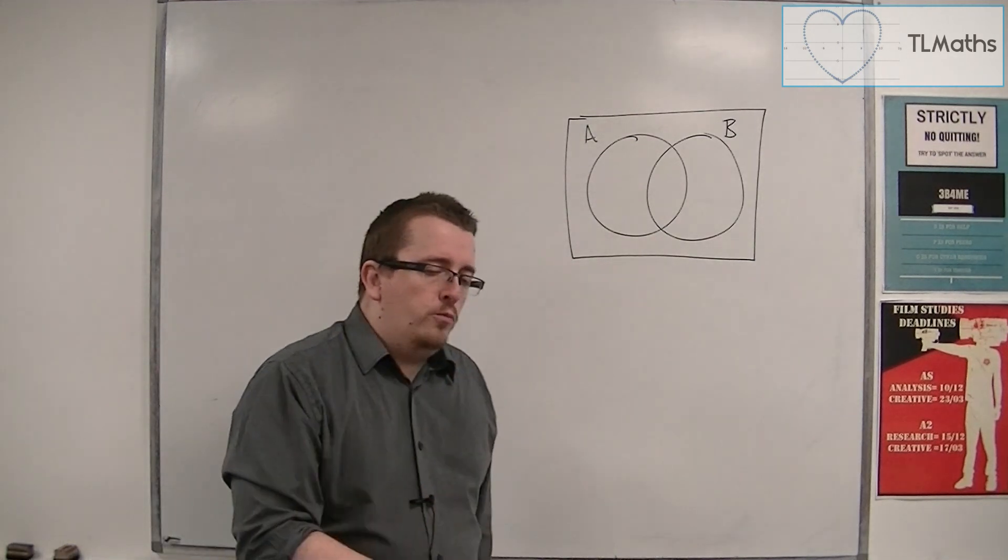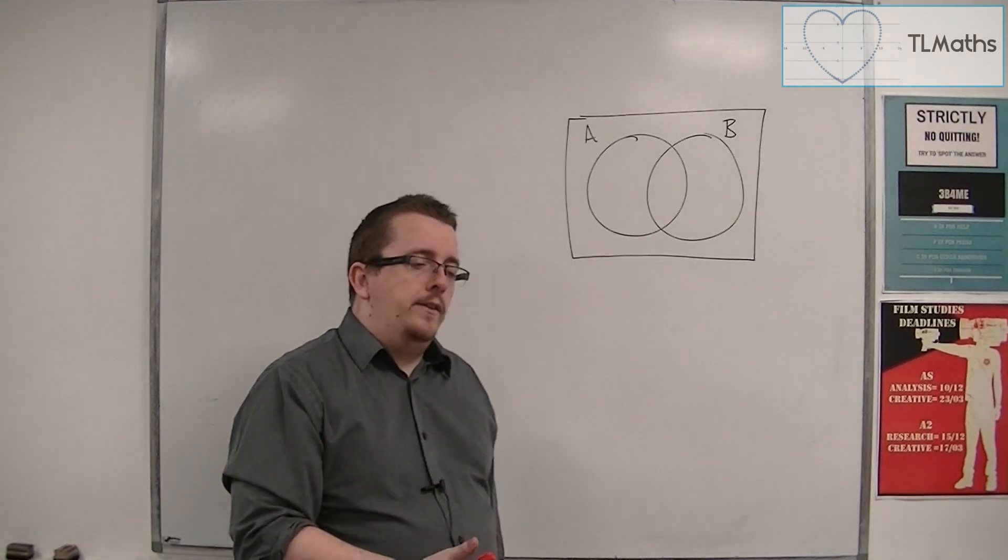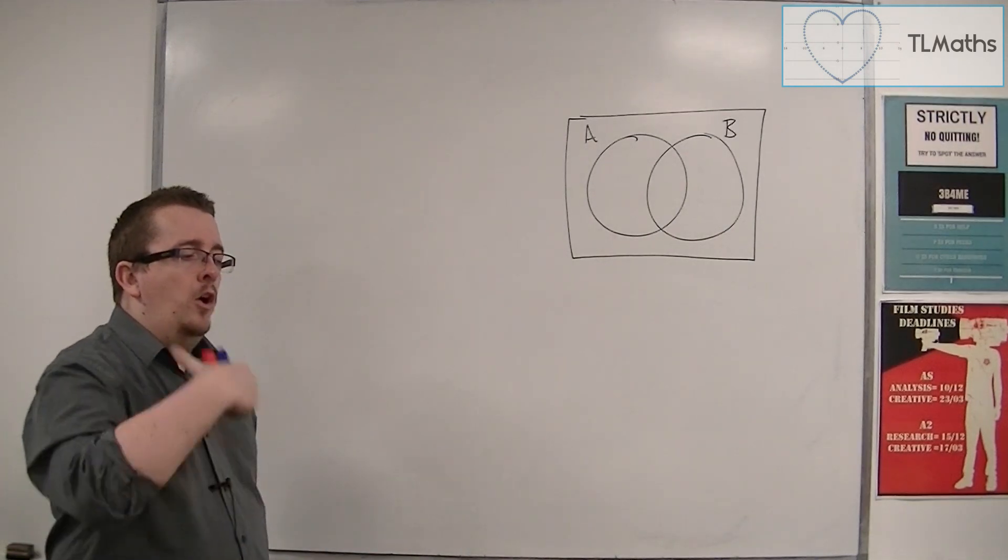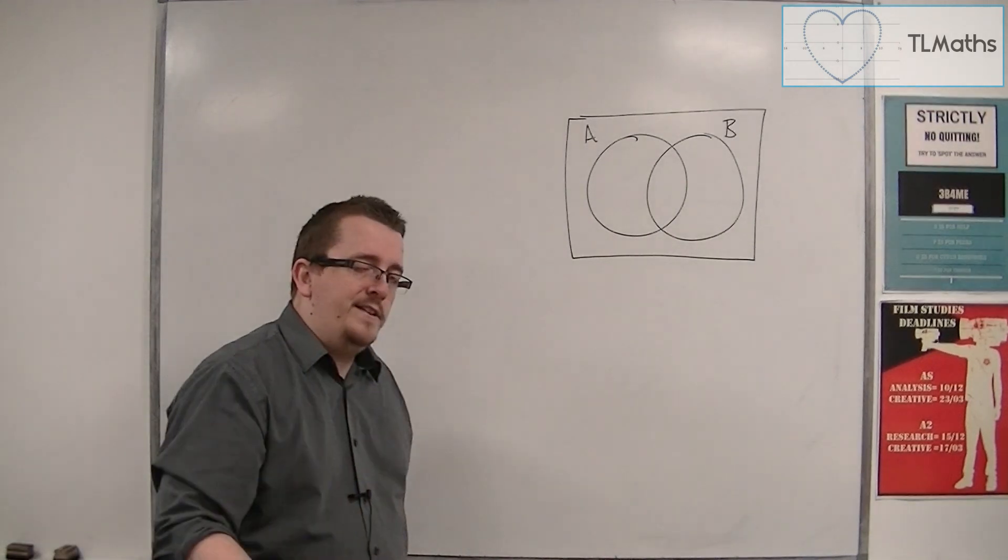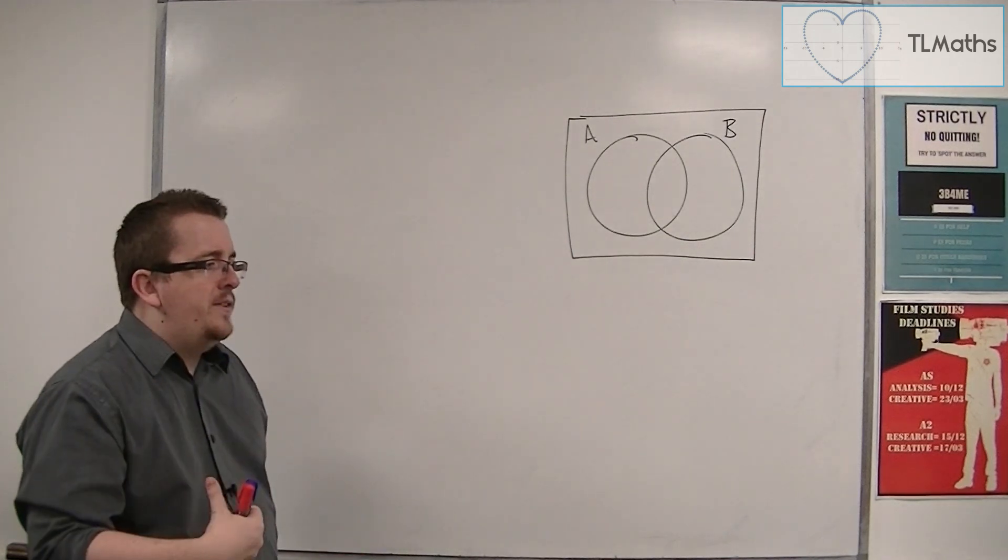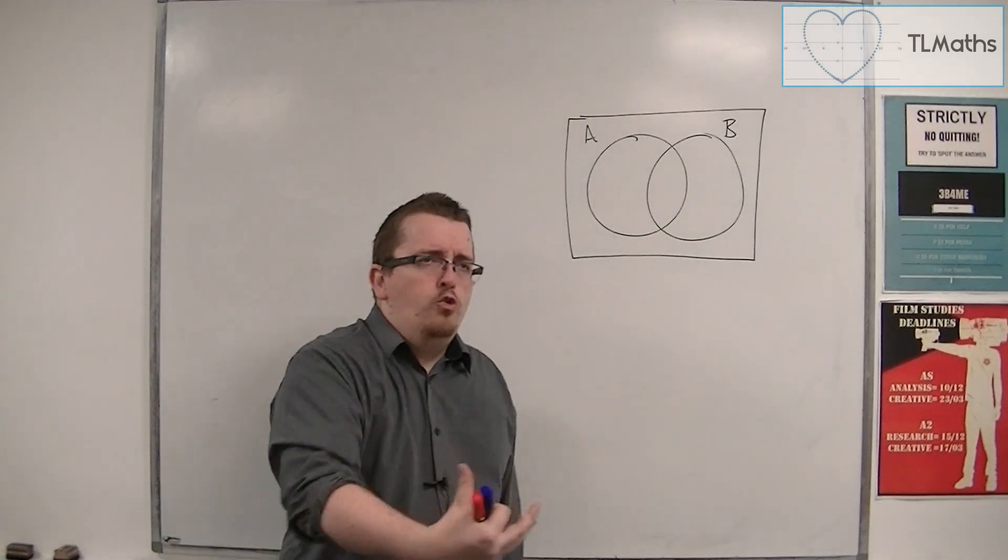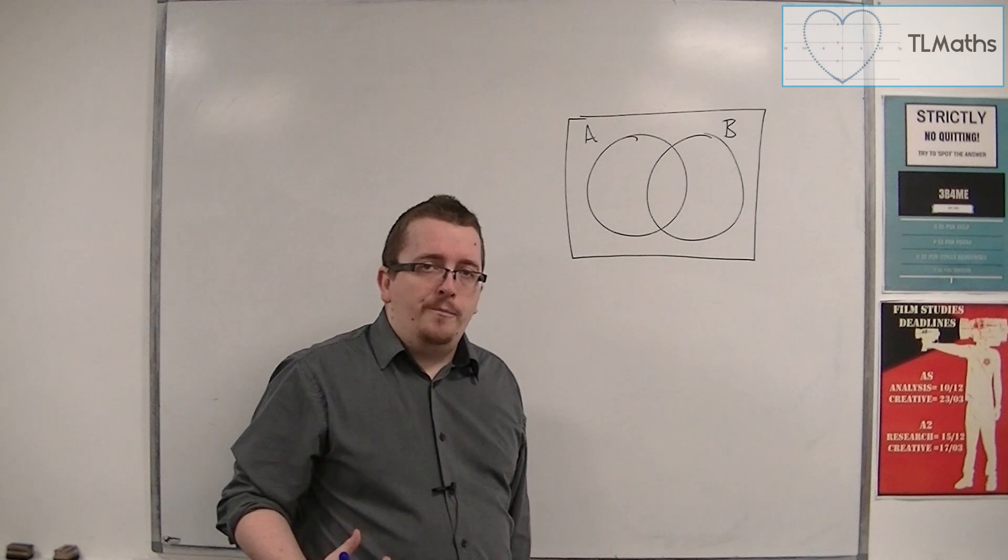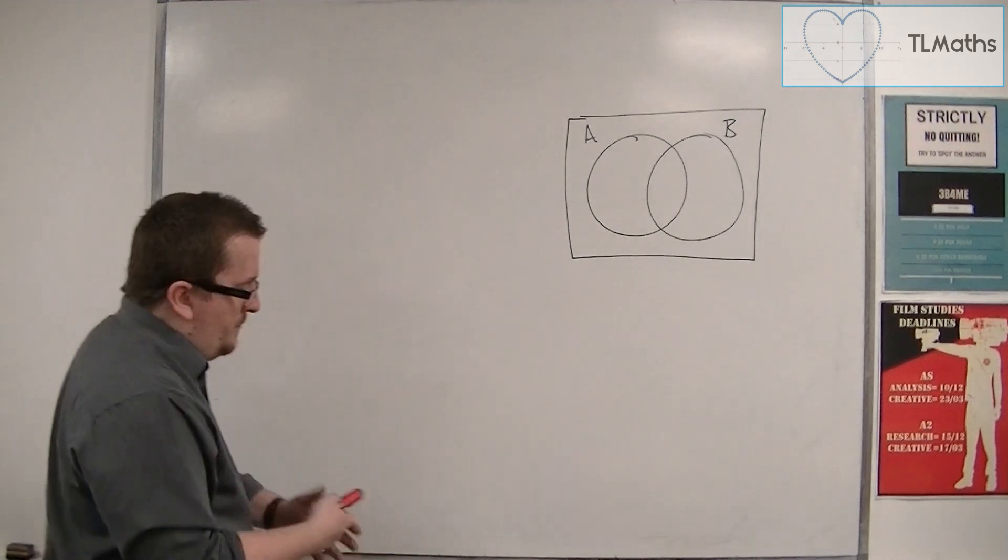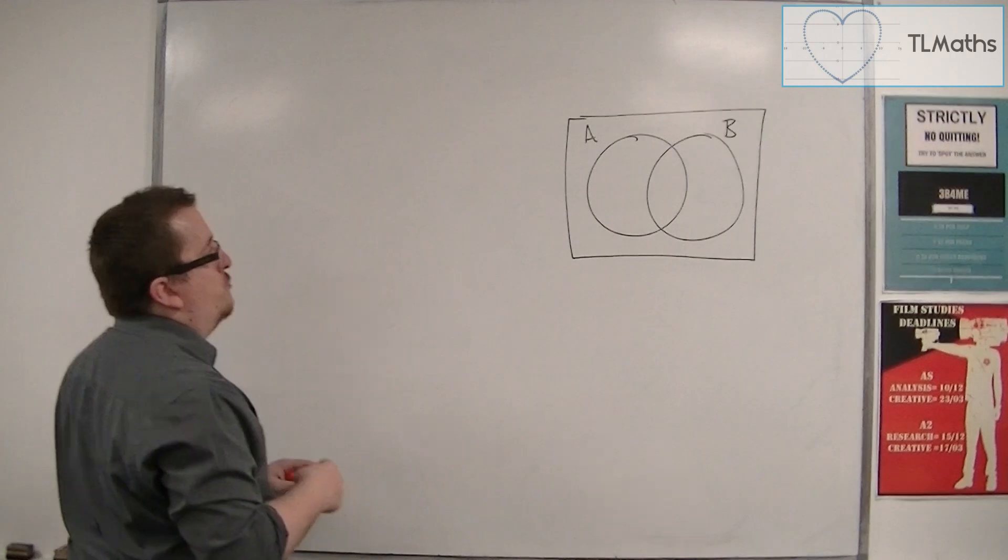Conditional probability refers to there being a condition on the probability that we're trying to find, which means that usually we already know a bit of information. So, for example, if this is my Venn diagram,